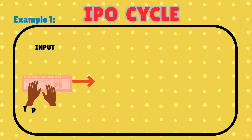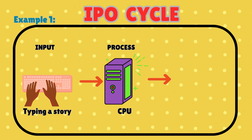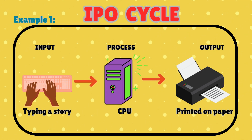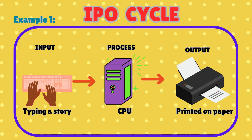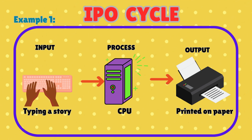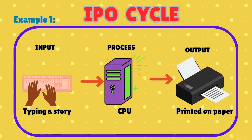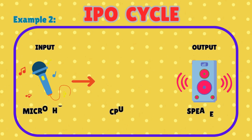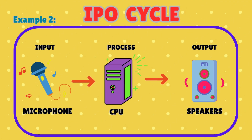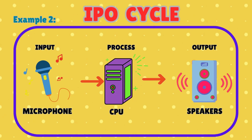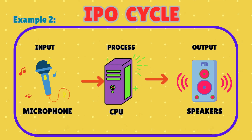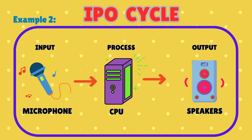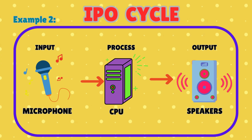For example, when we type a story on the keyboard, that is the input. The CPU processes the story and prepares it for printing. Finally, the printer gives the output by printing the story on paper. Here is another example: when we speak into the microphone, that is the input. The CPU processes our voice, and the speakers give the output by playing the sound aloud.